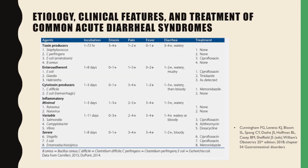Here is a table showing the etiology, clinical features, and treatment of common acute diarrhea. The toxin producers are usually Staphylococcus, Clostridium perfringens, E. coli, and B. cereus. We also have the enteroadherent agents: E. coli, Giardia, and helminths. The treatment for E. coli is ciprofloxacin. For Giardia, it's tinidazole. And for helminths, it depends on which helminth was detected.